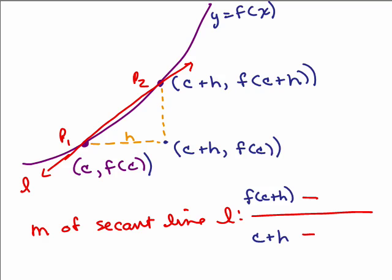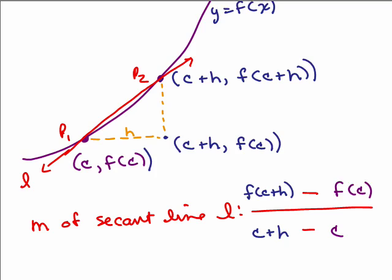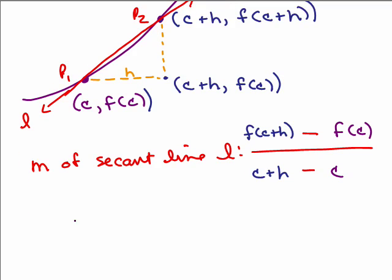And then the other ordered pair, we're going to do the y value over the x value, so that's f of c over c. So this is just y2 minus y1 over x2 minus x1, which is the formula for slope. And if we simplify that just a little bit more, in the denominator, c minus c, you're going to end up with just an h in the denominator.